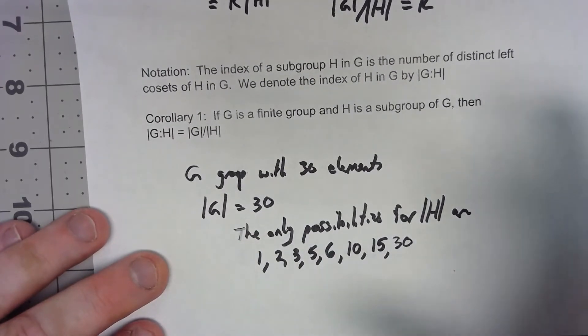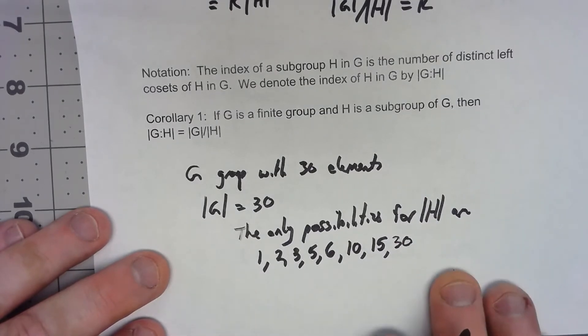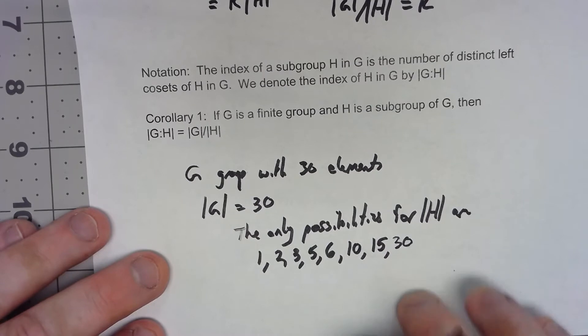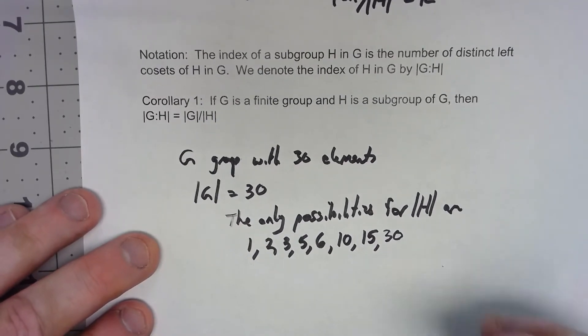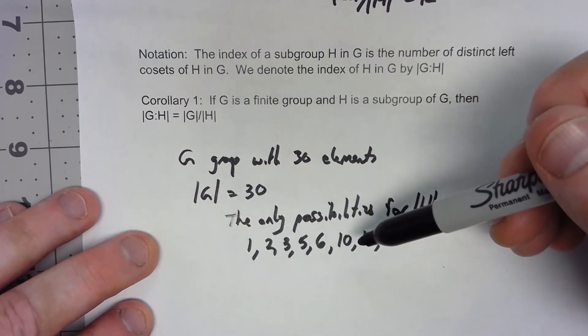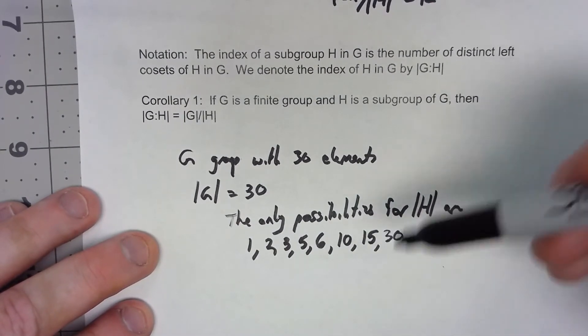No other numbers could we have in a subgroup of that order. Further, if we pick one of those, now it's worth noting that these are the only possibilities. It doesn't say that there is a subgroup of that order. If I have a group with 30 elements, there's nothing that guarantees I've got a subgroup with 10 elements. It's just that there might be.